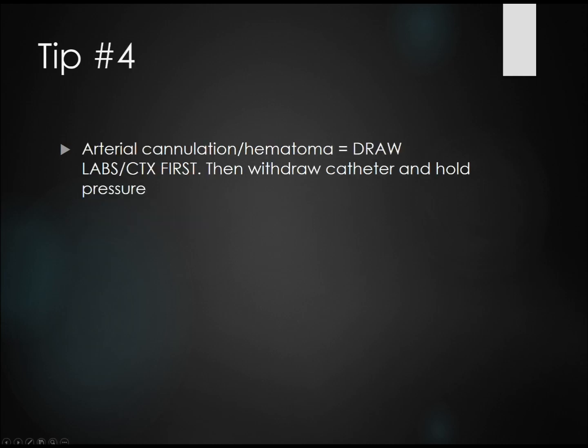Tip four: if you've had an arterial cannulation, don't forget — if you have a 20-gauge IV, it's no larger than a normal radial A-line. Draw the labs and cultures you need first, then withdraw the catheter and hold pressure.